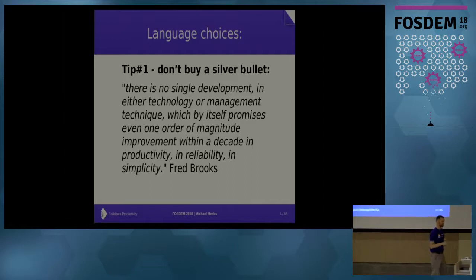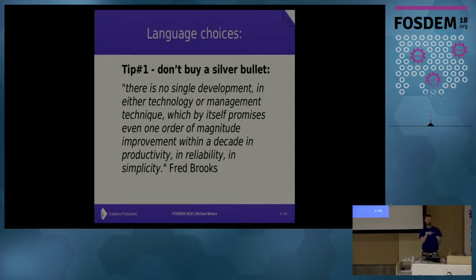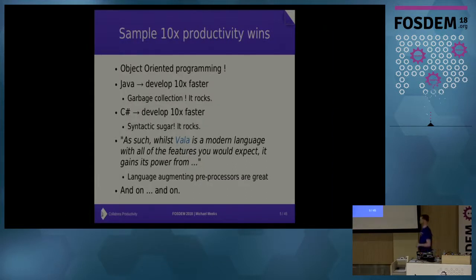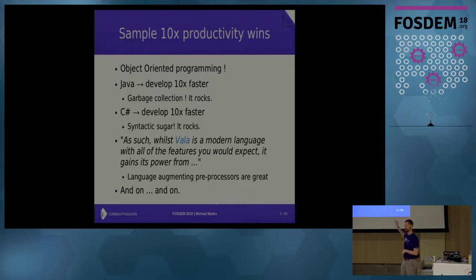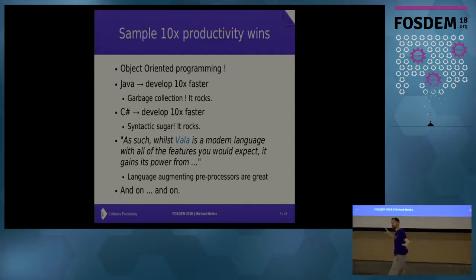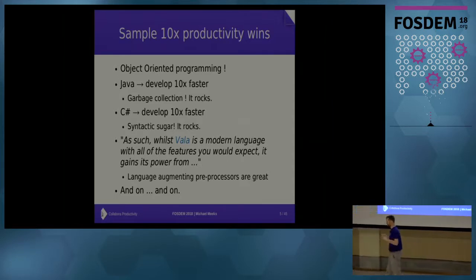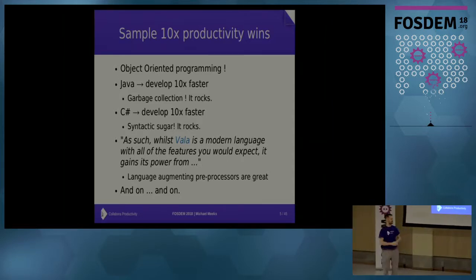If you meet a silver bullet salesperson, you might want to try filing the thing a bit and seeing if it's silver all the way down. Here are some silver bullets I've seen: object-oriented programming, of course. Java lets you develop ten times faster. Garbage collection is absolutely amazing and it's going to solve all memory lifecycle problems. C-sharp also helps you develop ten times faster — maybe only twice as fast as Java. But there are some good things: the syntactic sugar of C-sharp is infecting other people.